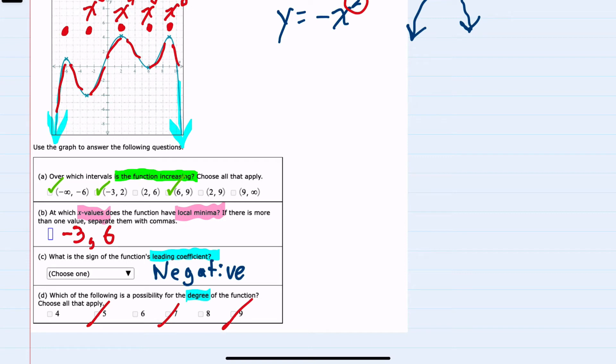This would be the minimum degree to change directions this many times. So 6 would be possible for the degree of this function.